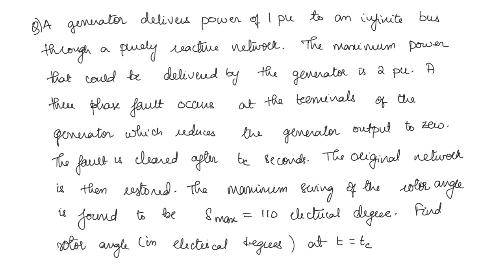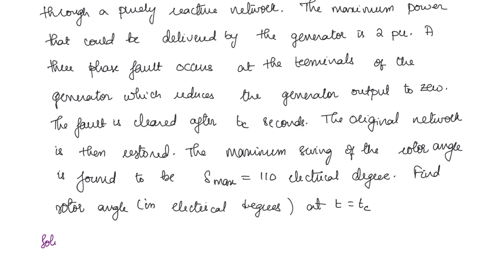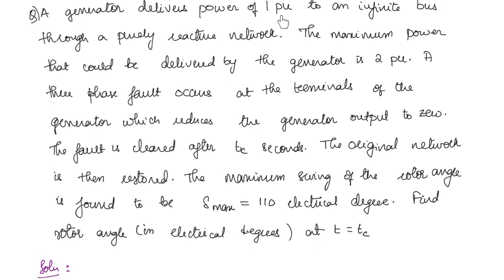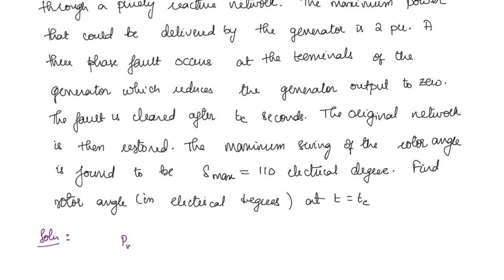A generator delivers power of 1 per unit to an infinite bus through a purely reactive network. The maximum power that could be delivered is 2 per unit. A 3-phase fault at the generator terminals reduces output to 0. The fault is cleared after Tc seconds, restoring the original network. The maximum swing of rotor angle is δ_max = 110 electrical degrees. Find the rotor angle at T = Tc.